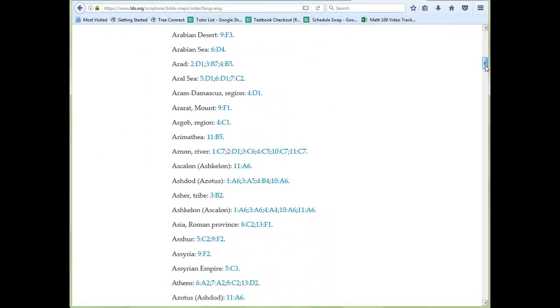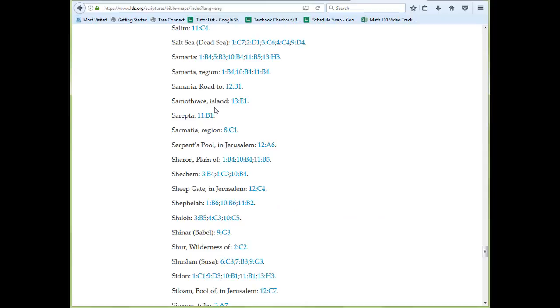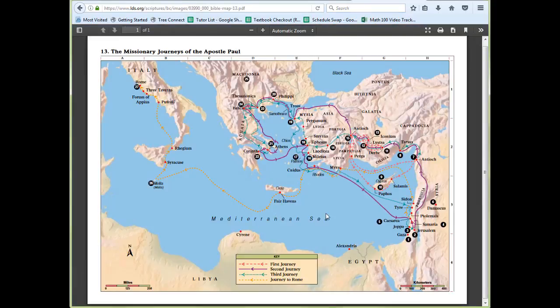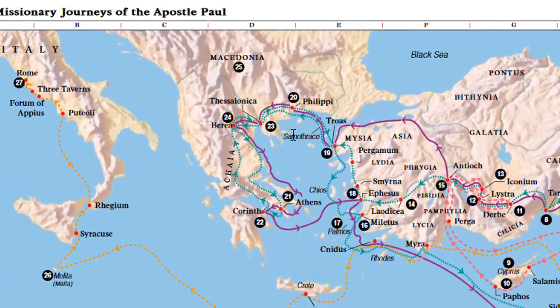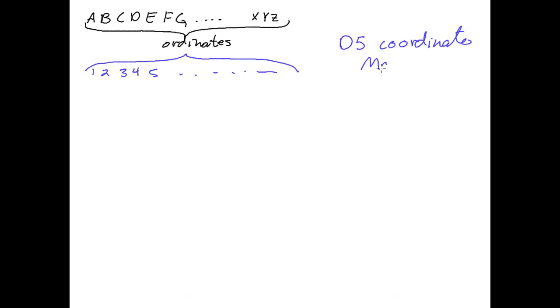Let's find Samothrace. It's in your textbook - go down to the S's and it says it's on map 13 square E1. Here's map 13, the missionary journeys of the apostle Paul. We go to E1, so you find the first ordinate E up here and then you go down to 1, and it should be somewhere in this area. There it is right there, Samothrace. So the coordinates help us to locate things.